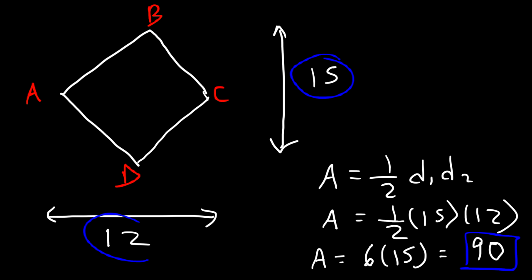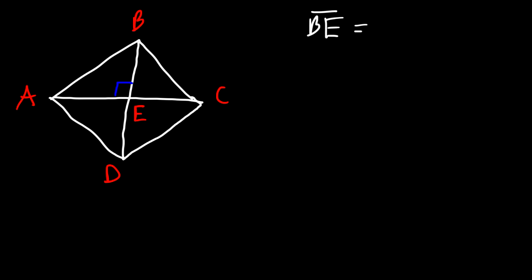Now let's work on another problem that's similar but also quite different. Once again, we have rhombus ABCD with diagonals AC and BD intersecting at point E. The two diagonals meet at right angles. Segment BE is equal to 8 and segment CE is equal to 10. What is the area of the rhombus?